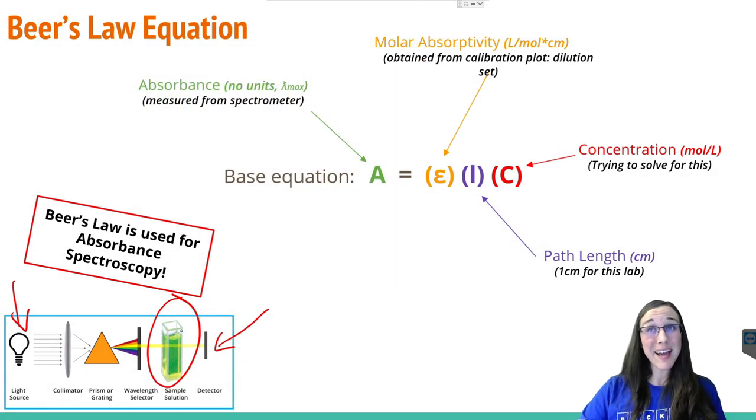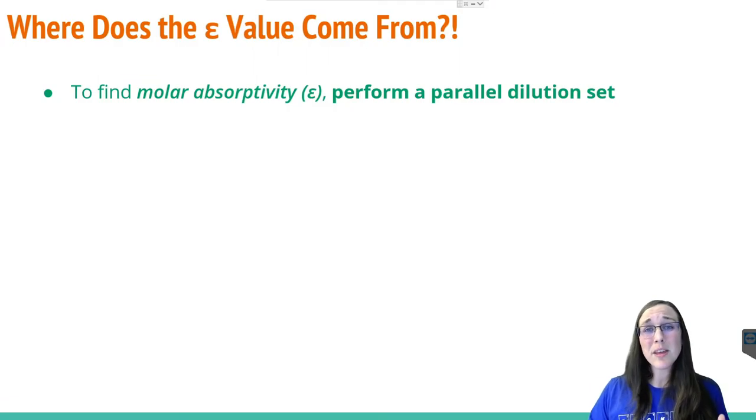So that lambda max is the value that we can plug in for our A, our absorbance, in Beer's law equation, which is the value we obtained from our spectrometer in the lab. What about the molar absorptivity or this E? It's also known as an extinction coefficient. Where does that come from? This is also something you have to obtain in the lab setting by performing a parallel dilution set.